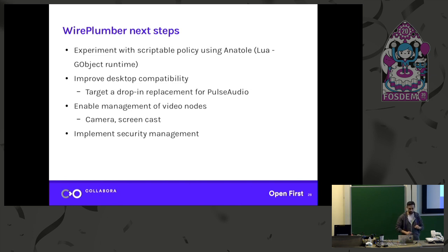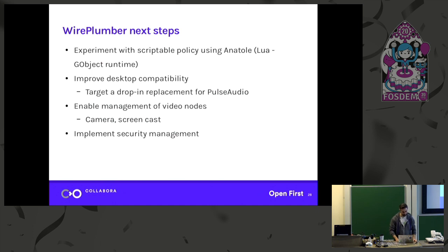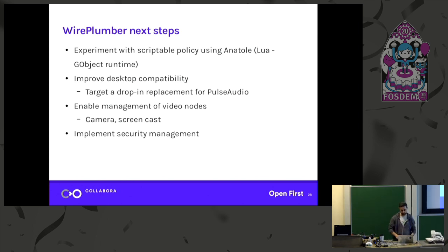But we have a plan. The next steps: I want to experiment with a scriptable policy, provide an API that scripts can be written to influence how decisions are taken about what to link where. There is a runtime called Anatoly, written by Bastian Nosera, written basically for this purpose — for managing PipeWire policies. My next step is to experiment with that and see if we can write nice scripts. Other ways of doing that would also be acceptable and welcome. The other thing is to improve desktop compatibility and make a drop-in replacement for PulseAudio. Another next step is to enable management of video nodes, camera inputs, and screencast inputs, and implement security management. There is a design for that — I just haven't gotten around to implementing it.